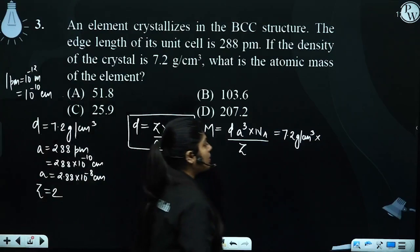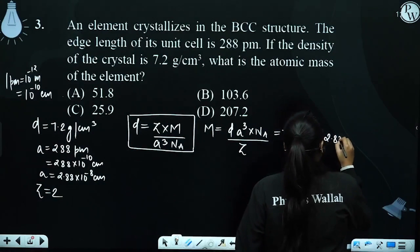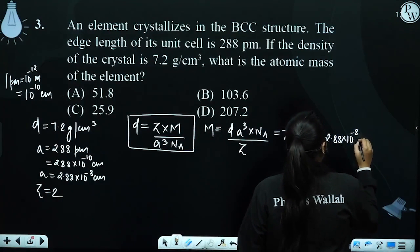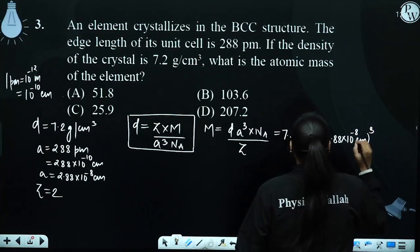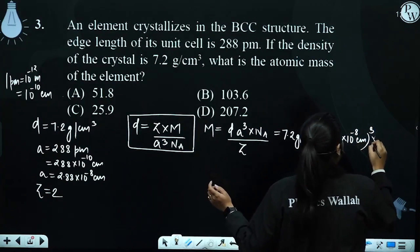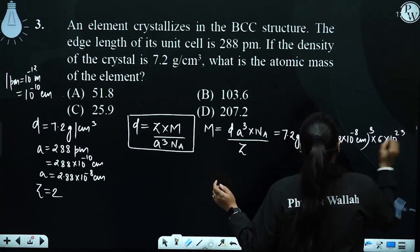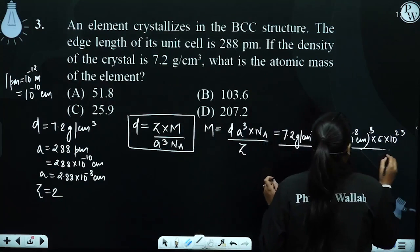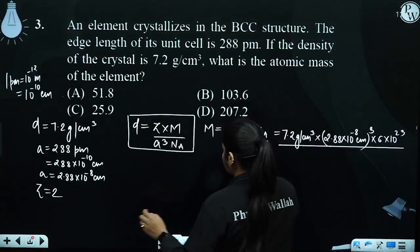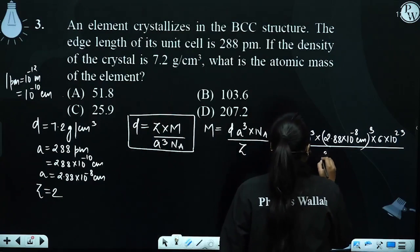Now we can put it here. A cube is 2.88 into 10 to the power minus 8 centimeter, cubed. Multiplied by Avogadro number, which is 6 into 10 to the power 23. And upon Z, which is 2 for BCC.